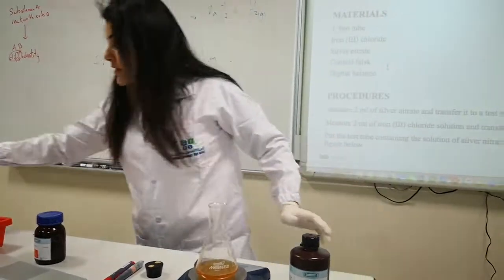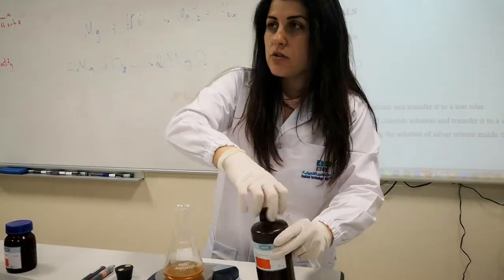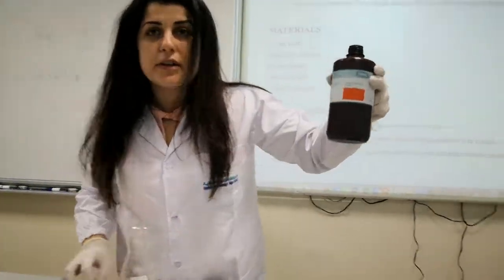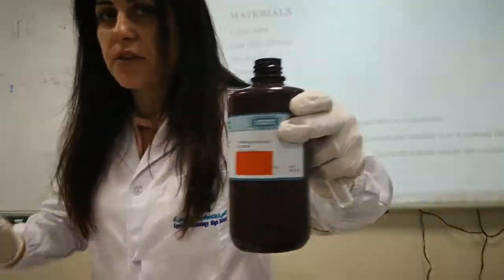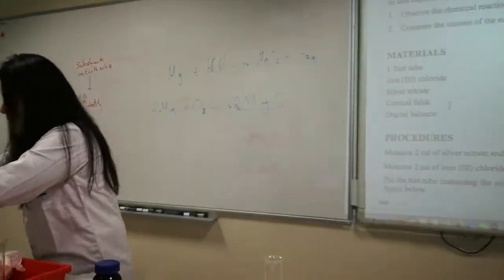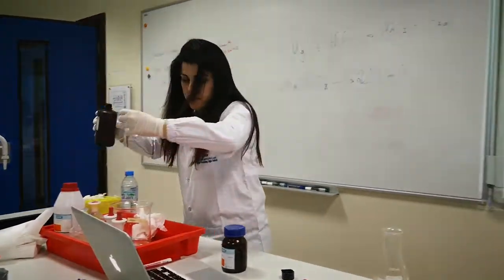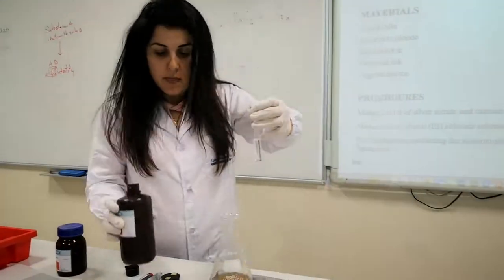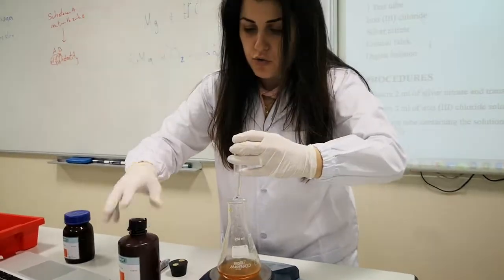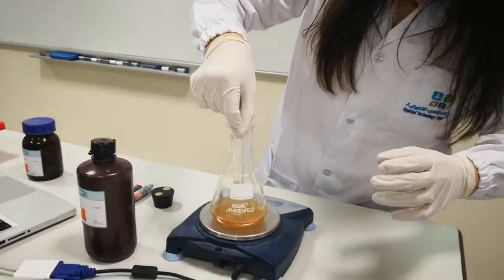In another test tube, we are going to add a solution of silver nitrate. This silver nitrate solution will then be dropped into the flask.